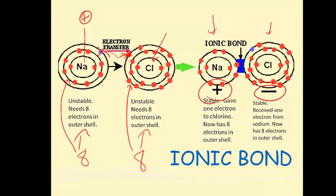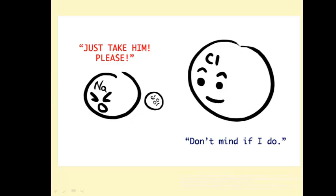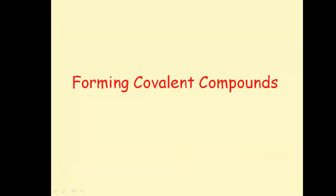Sodium and chlorine are ionically bonded. Ionic bonding takes place between a metal — in this case sodium — and a nonmetal — in this case chlorine. Ionic bonds form when metals lose electrons and nonmetals gain electrons; electrons are transferred.